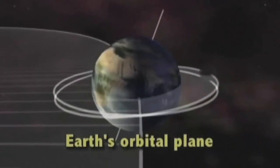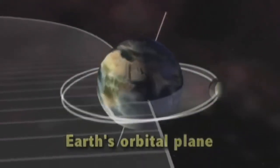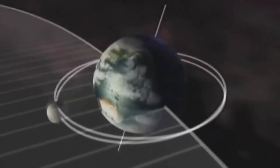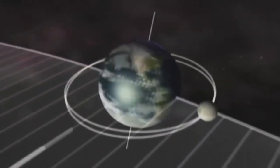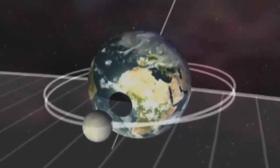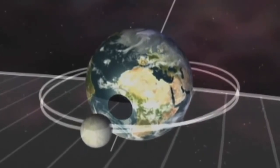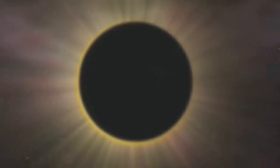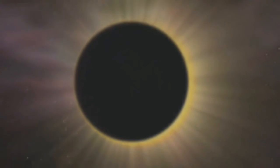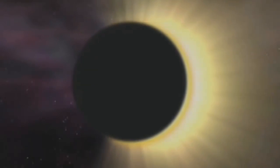The Moon passes through the plane only twice during each of its orbits. If the Moon also happens to be in a new Moon phase when it crosses Earth's orbital plane, then a solar eclipse will occur. Most eclipses are partial because the new Moon takes place just before or after the Moon crosses the orbital plane. But if the timing is right, a total eclipse of the Sun occurs just as the center of the Moon passes directly in front of the center of the Sun.